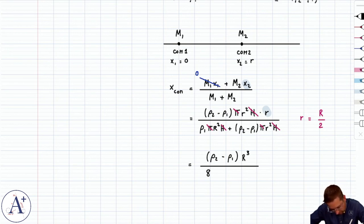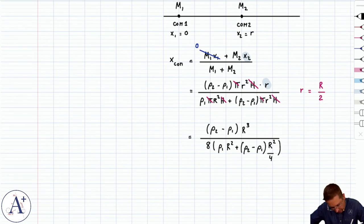And then we have times rho1 r squared plus rho2 minus rho1, big R squared over 4, because little r is big R over 2, and ultimately that cleans up to r2 minus r1, and if I distribute the 8 in the denominator, I get 8 rho1 plus 2 rho2.